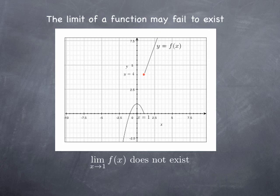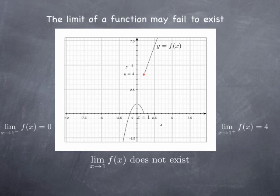This is a limit in the usual sense. However, we can specify why this limit fails to exist or how it fails to exist. To give a little more information on the behavior of the function near x equal 1, we can say that the limit from the left is 0 and the limit from the right is 4.